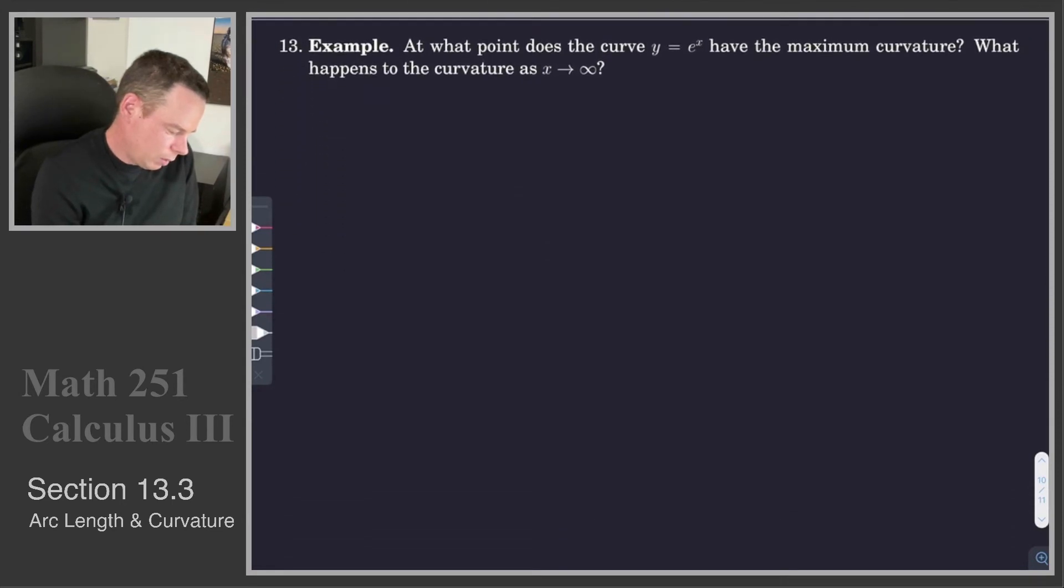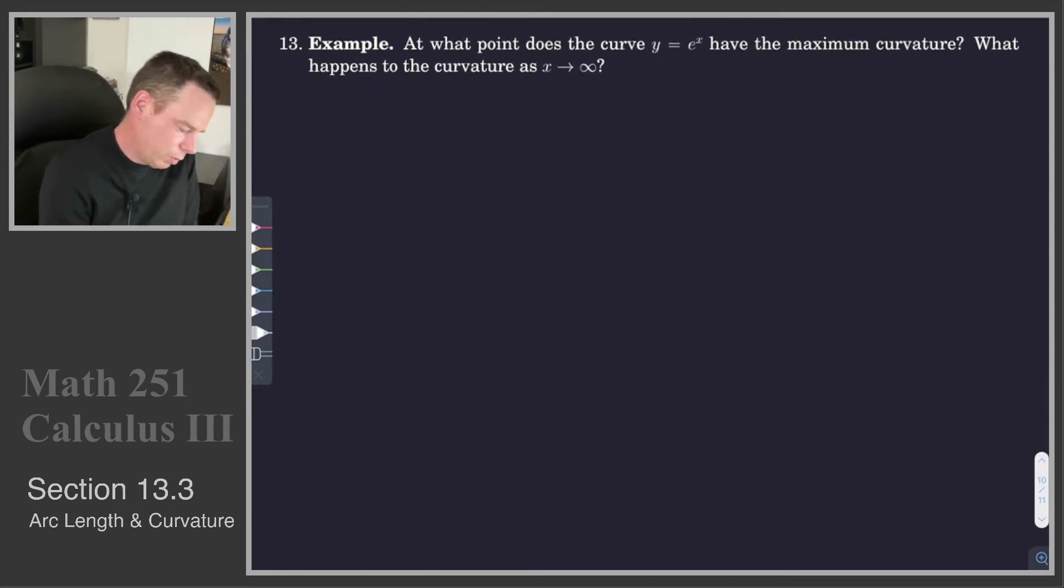So we can now do a follow-up example. At what point does the curve y equals e to the x have maximum curvature? So if we think about what y equals e to the x looks like, it looks like this. And again, if you want to think about curvature, it's like bending. Where is it bending the most? Where is it bending the least? It looks like it's not bending very much way out here, and way out here. It doesn't look like to be bending very much.